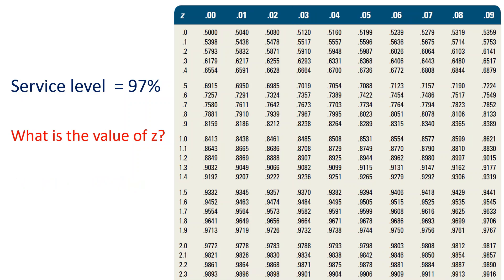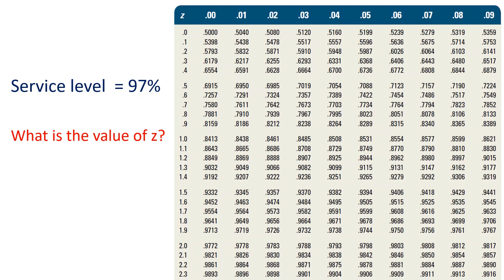To make sure that you can do this by yourself, find the z value corresponding to a service level of 97%. Pause this video, take your time to find it, and write the value you find in the comments, then play the video to check your answer. It is 1.8 plus 0.08 equals 1.88. Excellent — you obtained the same value. If not, watch the video again.